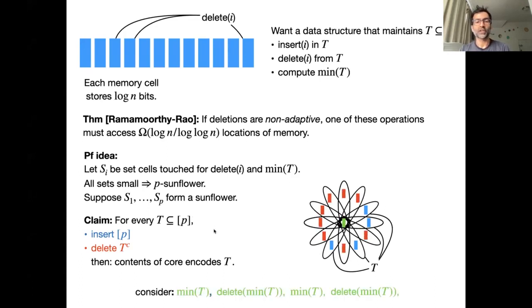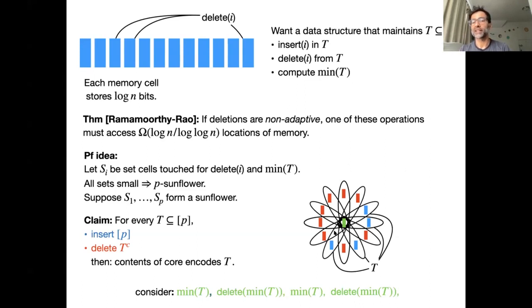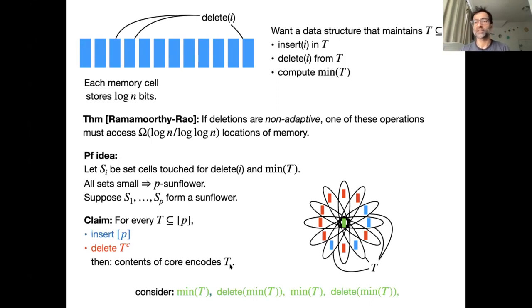The reason the core suffices to recover T is that you can simulate a sequence of operations — compute the minimum of T, delete it, compute the minimum again, and so on — using only the contents of the core. The sunflower configuration allows efficient encoding of a set in a very small number of cells, and if this efficiency is too great, it proves the purported algorithm cannot work.